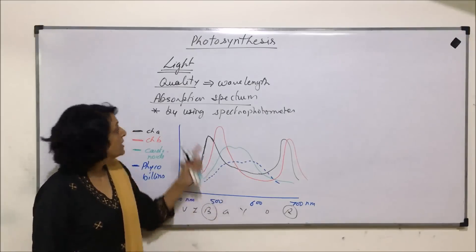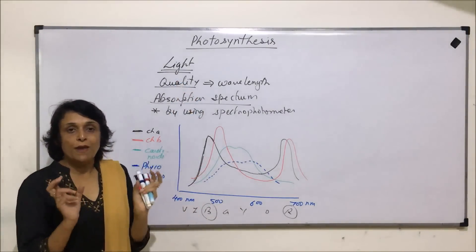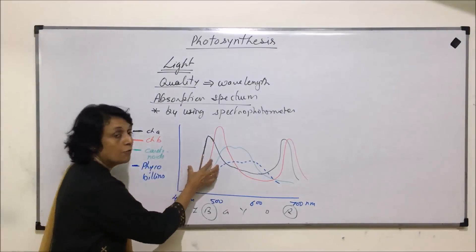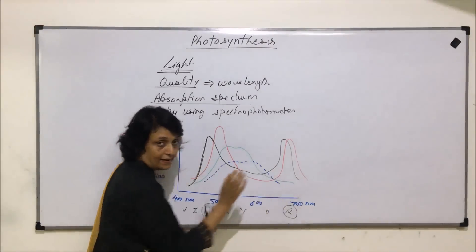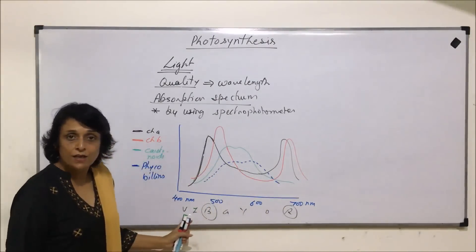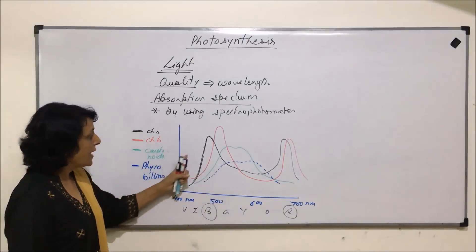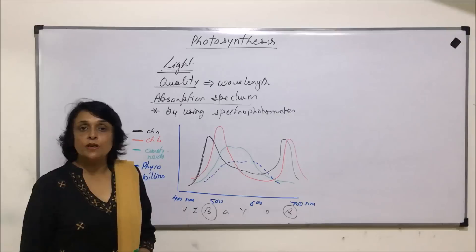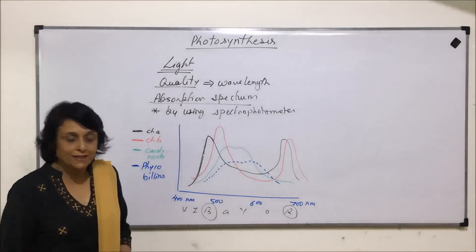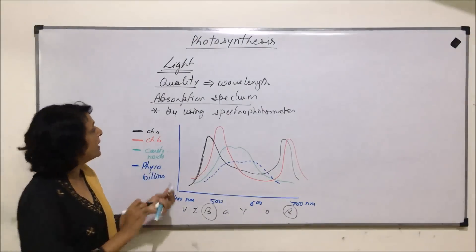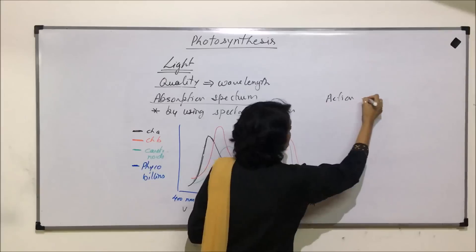When we talk about the quality of light, the blue wavelength and the red wavelength are very important for chlorophyll A and B because maximum absorption occurs there. Where absorption is maximum, photosynthesis should also be maximum. This interpretation is represented as the action spectrum.